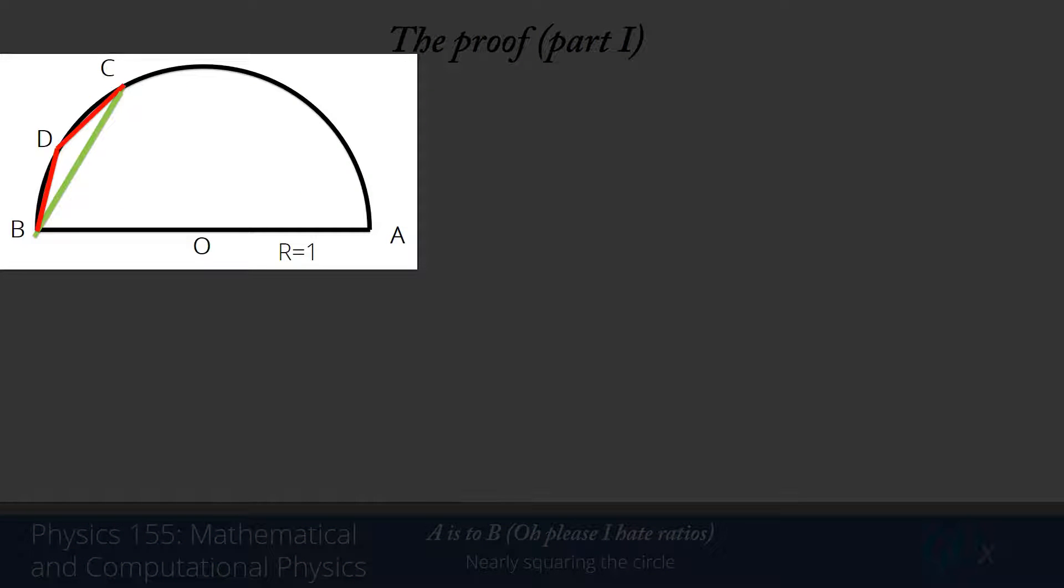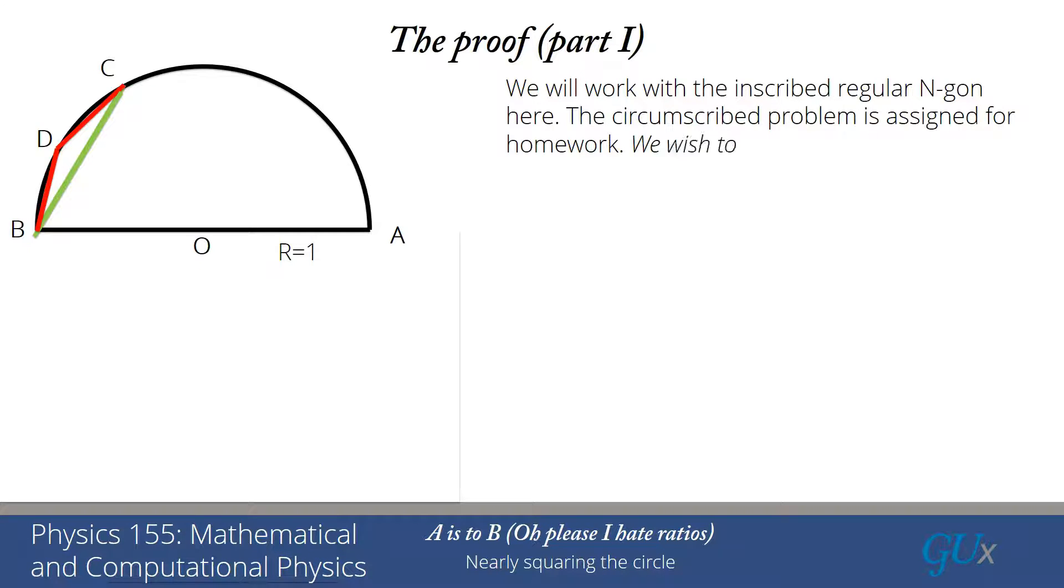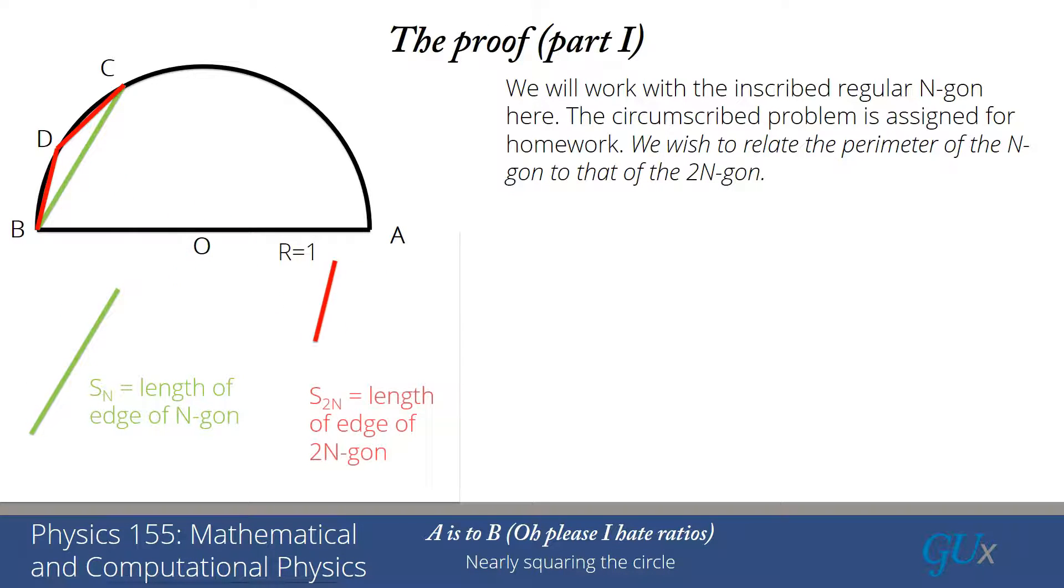So what we have drawn for you here in the circle is the inscribed n-gon, one edge of it in green, and the inscribed 2n-gon, two edges of it in red. And we have the circle, and the points C, D, B, and A are on the perimeter of the circle. They're on the circle itself. So we're going to work with that inscribed regular n-gon here. The problem for the circumscribed one is assigned as a homework problem for you, and that's something that you're going to be getting to a little bit later in the class.